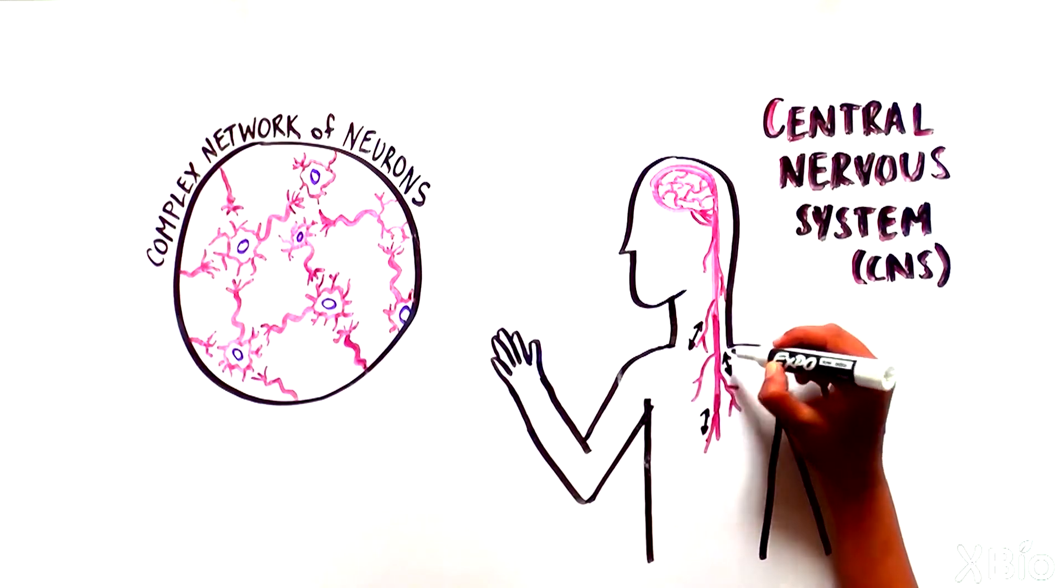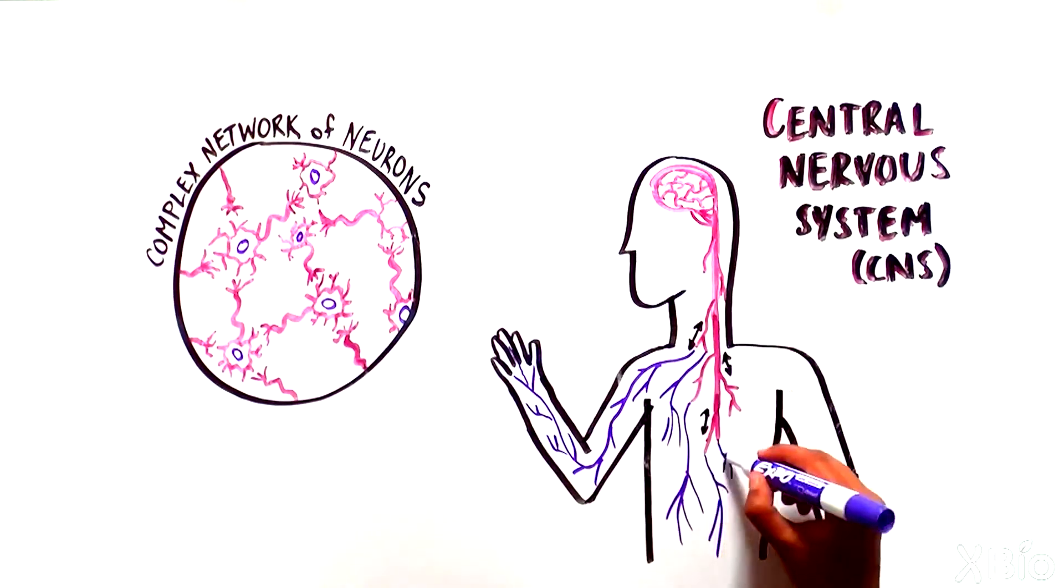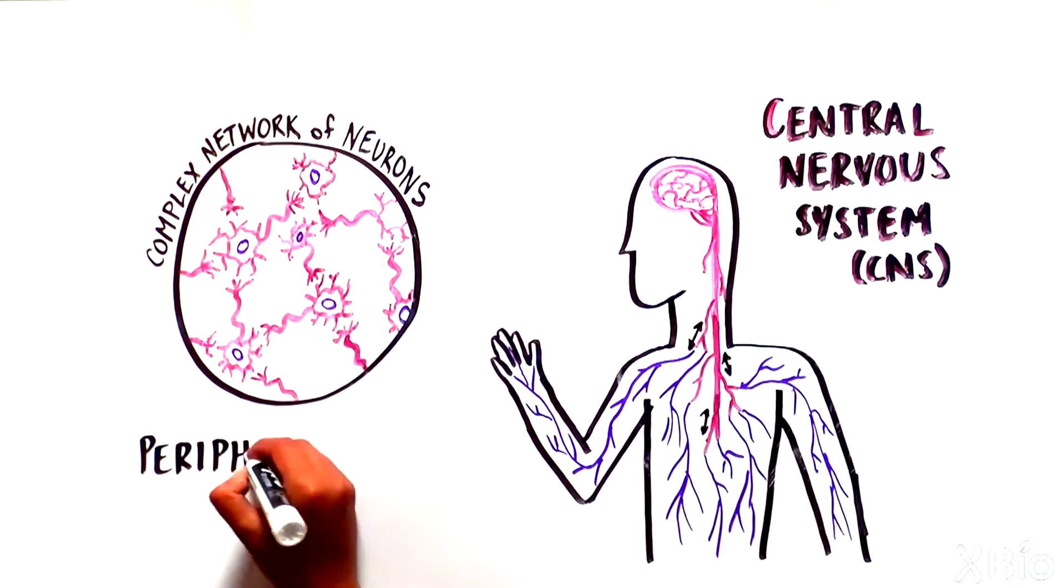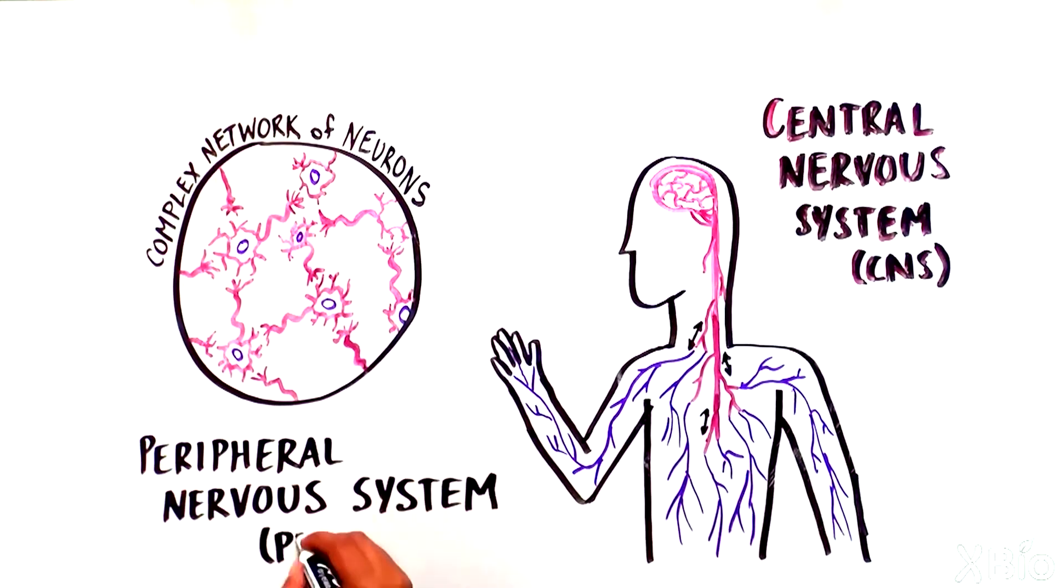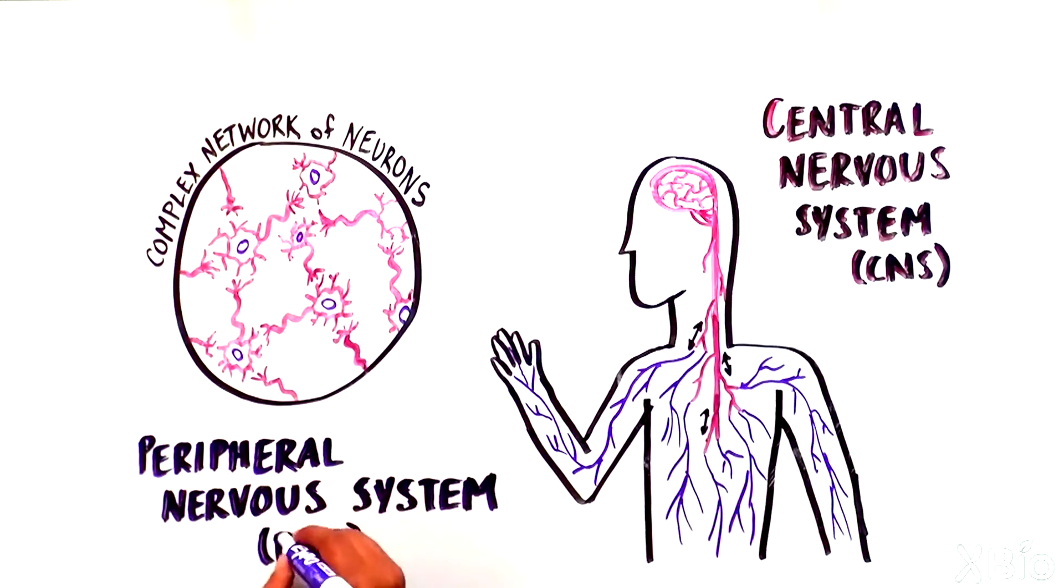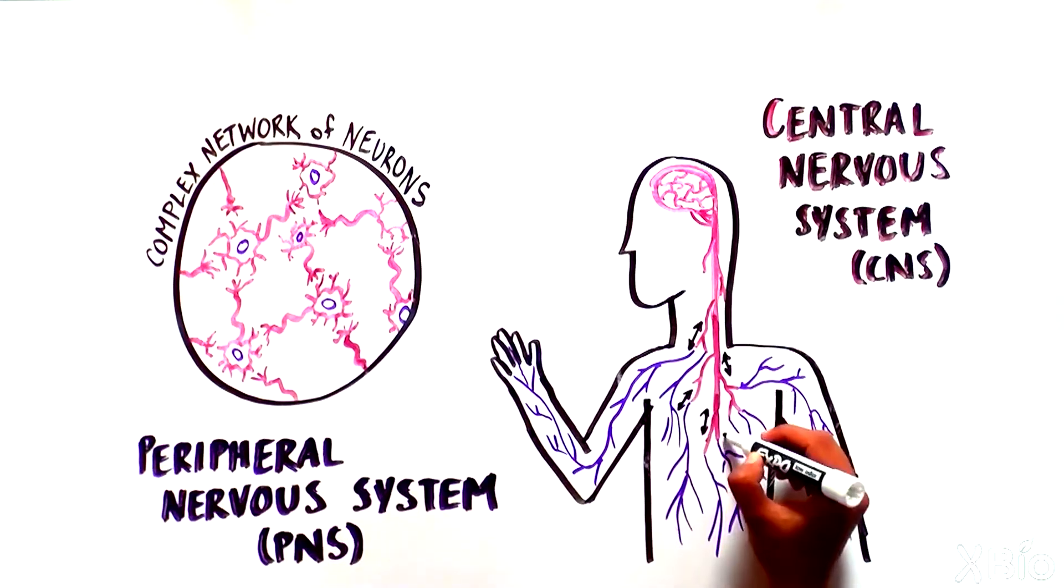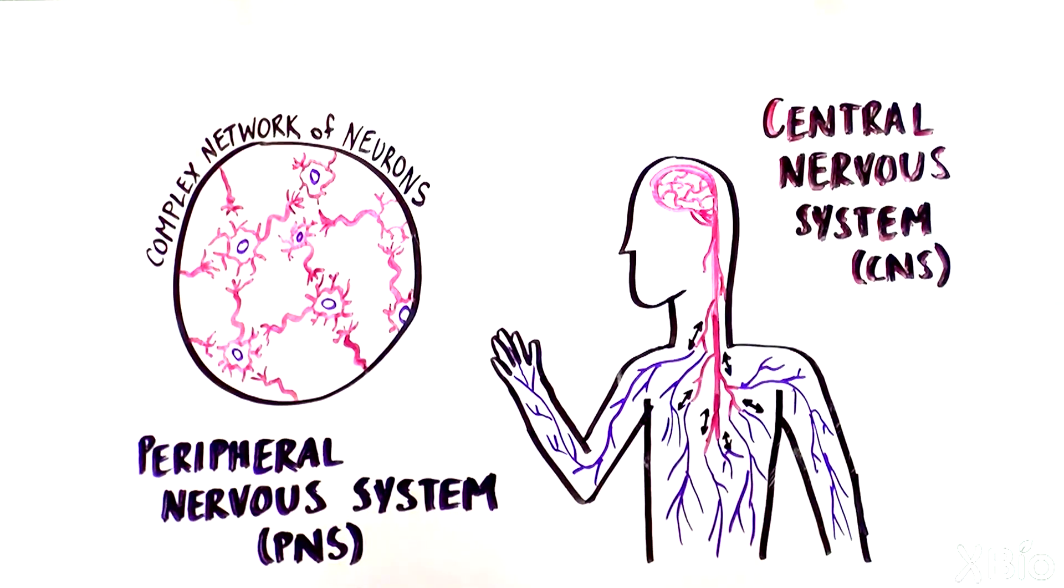All of the neurons outside of the central nervous system make up the peripheral nervous system, which is responsible for carrying out commands from the CNS, as well as sending information from the rest of the body and the environment to the CNS.